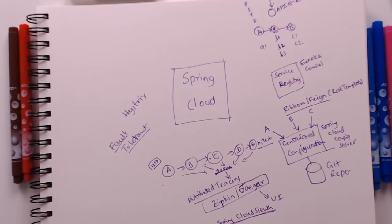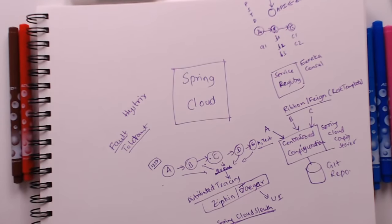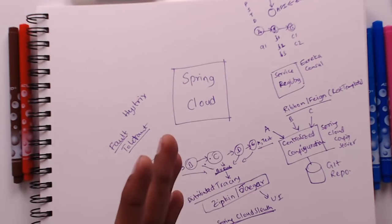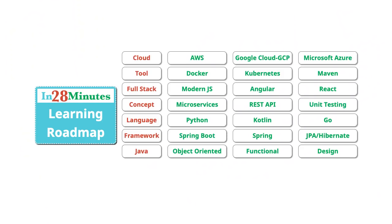We are creating a wide variety of things at in28minutes to help you become a cloud developer — learning microservices, cloud, and full stack. Check out the playlist where we continue this talk about microservices and architecture evolution: we started with web applications, went to REST API, talked about full stack, and now we're at microservices with Spring Boot and Spring Cloud. In the subsequent videos we'll be talking about Kubernetes in depth and how microservices work together with Docker and Kubernetes. Make sure you like and subscribe.